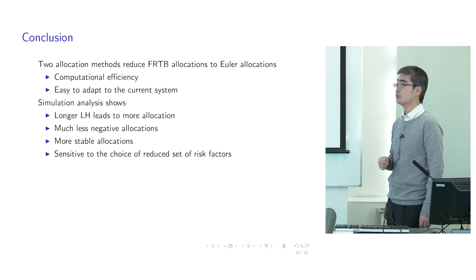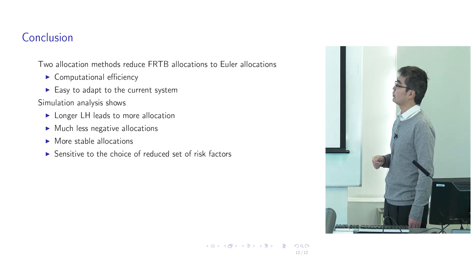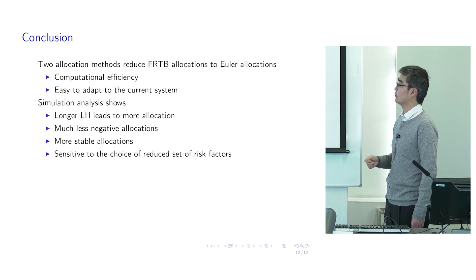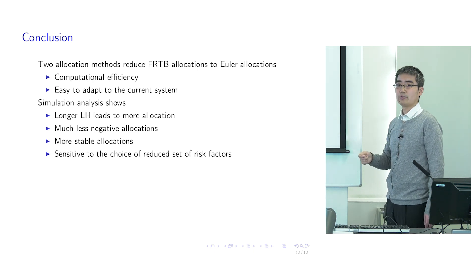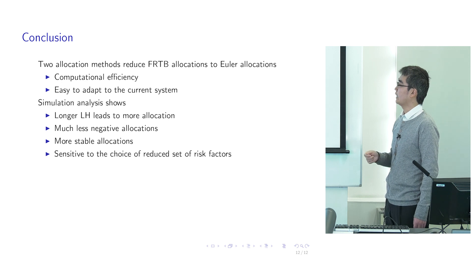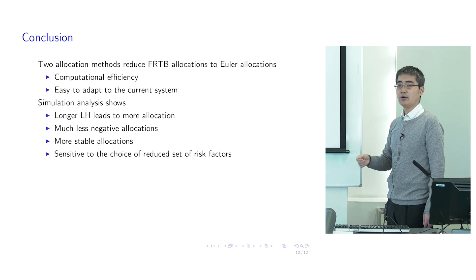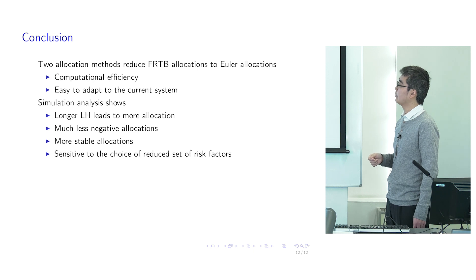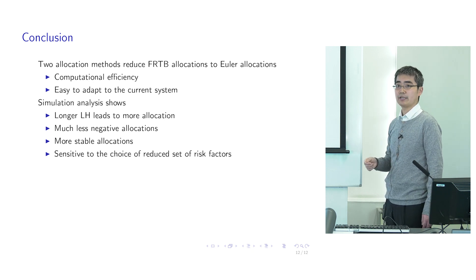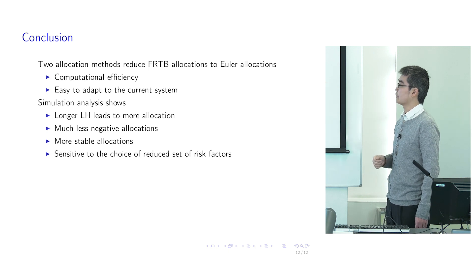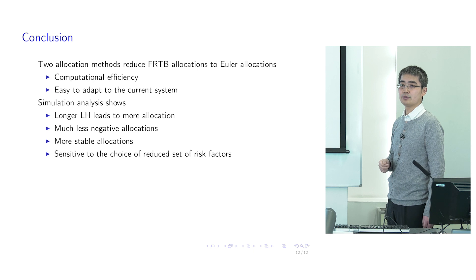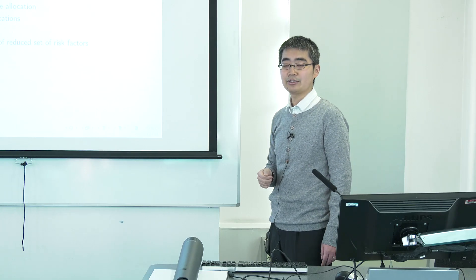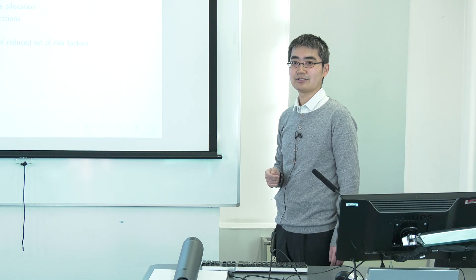In conclusion, we introduced two allocation methods specifically designed for FRTB. Both are computationally efficient and can be adapted to the current system quite easily. Simulation shows that longer liquidity horizon buckets usually lead to larger allocation, and due to the constraint on hedging among different buckets, negative allocation is much less compared to the current framework. Both allocation methods produce more stable allocation, and the current regulation framework is also quite sensitive to the choice of risk factors. Thank you.